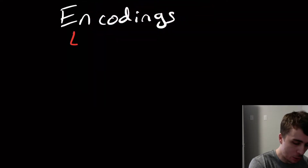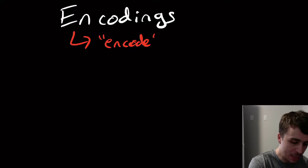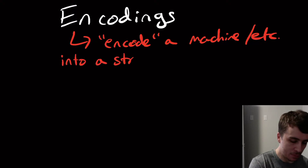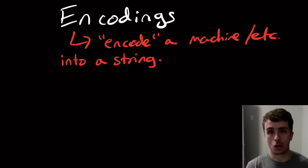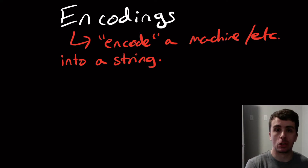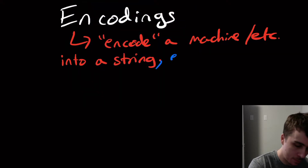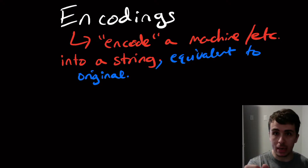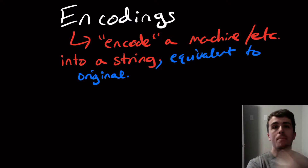The purpose of encoding is to encode a machine — or whatever it is — into a string. That's literally all an encoding is: instead of having the machine itself, you convert it into a string that's equivalent to the original. By equivalent, I mean that if I give you the string then you can figure out what machine it is, and vice versa. If you have the machine you can make the string from it, so they correspond one-to-one.